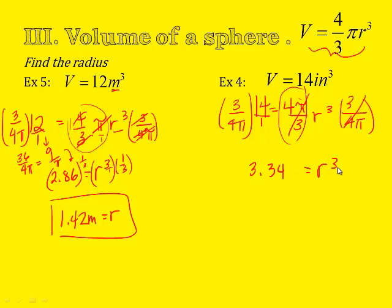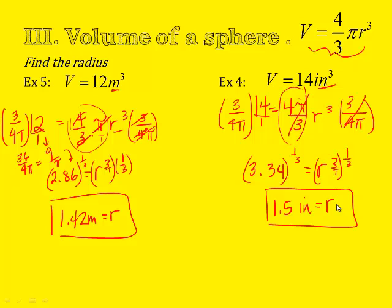Now we said to get rid of this power here, we're going to multiply by the reciprocal, or raise to the reciprocal exponent. So this is 3 over 1, I raise it to the 1 over 3 power, or the cube root power. So r will equal, when I type this in my calculator, the cube root of 3.34 is 1.5. And remember, your unit is inches. So we're starting with the volume and working backwards to find our radius.